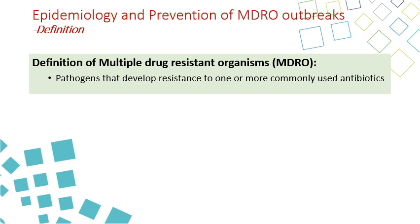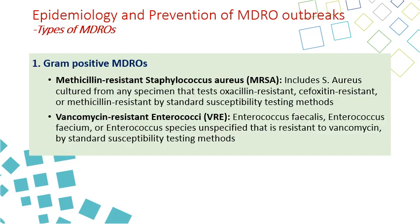For the definition of MDRO, any pathogen that develops resistance to one or more commonly used antimicrobials is considered an MDRO. These include gram-positive and gram-negative organisms. Gram-positives include MRSA and VRE. MRSA is a Staphylococcus cultured from any specimen that is resistant to oxacillin, cefoxitin, or methicillin by standard susceptibility testing. VRE is any Enterococcus faecalis, Enterococcus faecium, or Enterococcus species unspecified that is resistant to vancomycin by standard susceptibility methods. Although VRE is tested resistant only to vancomycin and MRSA to methicillin or similar drugs, they are resistant to multiple other drugs — that's why they are considered MDROs.